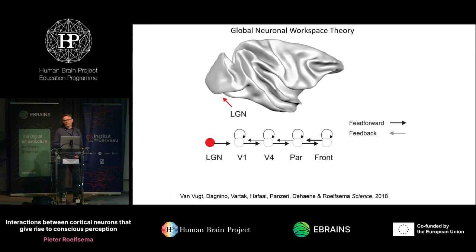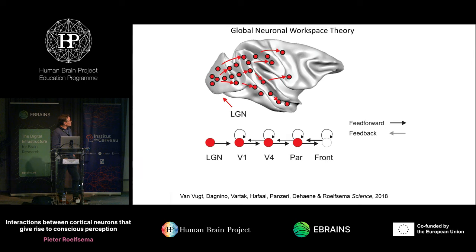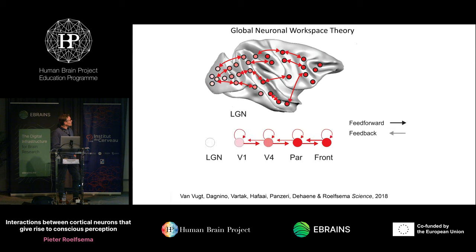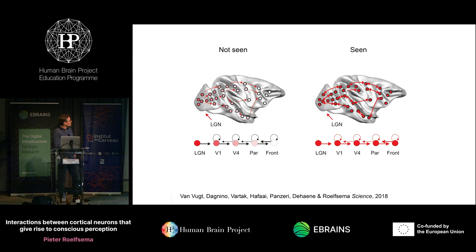When we got the results, it turned out we were supporting Dehaene's global neuronal workspace theory. It suggests that when you present a weak stimulus, it's first propagated to prefrontal cortex. There, something called ignition occurs — a self-stabilized activity pattern such that even after the stimulus is removed, there's still a trace that you saw a stimulus, a working memory, so to say. If on some trials the stimulus is not propagated very efficiently, you don't get ignition and you get a miss. On trials where the same stimulus is propagated more strongly, ignition occurs and you get a hit. That's the logic of the experiment.